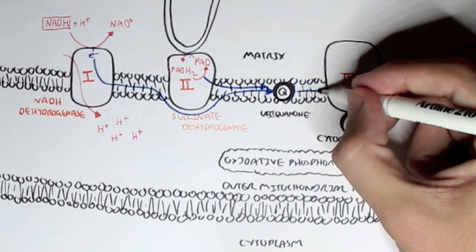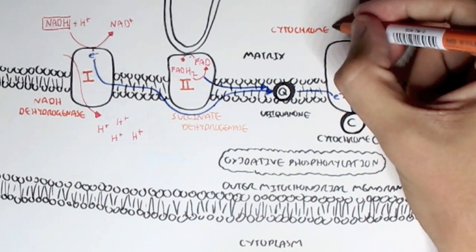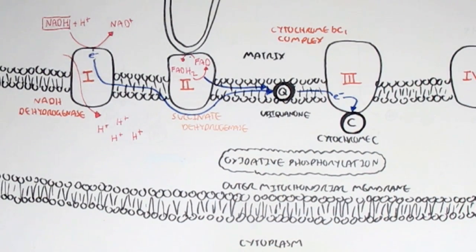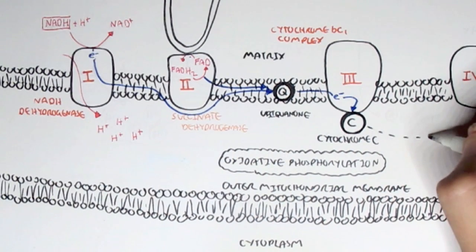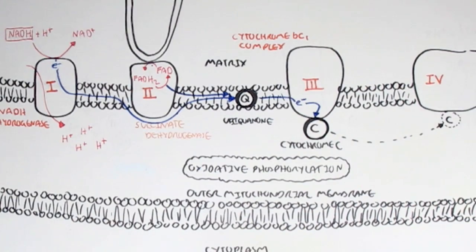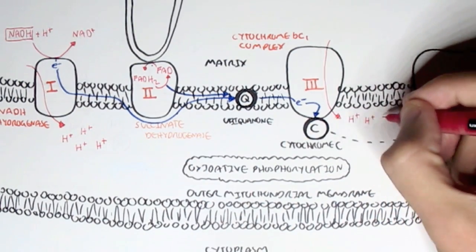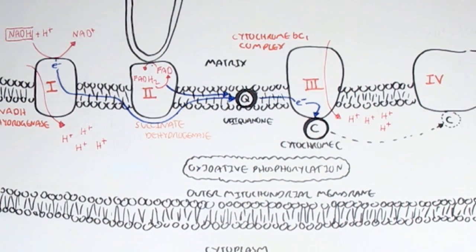Ubiquinone, because it's mobile, can move around the intermembrane space and give these electrons to complex three, known as cytochrome BC1 complex, or cytochrome oxyreductase — it has many names. Ubiquinone gives these electrons to complex three, which then gives them to cytochrome C. Cytochrome C is interesting because it is a mobile protein, same as ubiquinone, and cytochrome C can travel to complex four. Complex three, as well as giving the electrons to cytochrome C, will also pump four hydrogen ions from the matrix into the intermembrane space.